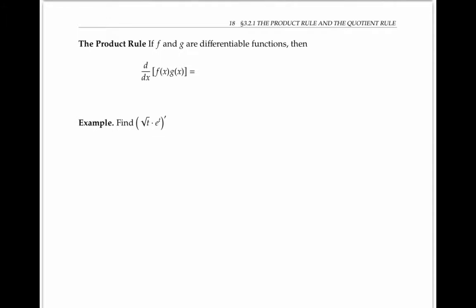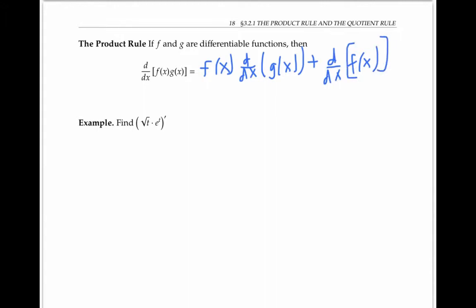The product rule says that if f and g are differentiable functions, then the derivative of the product f(x) times g(x) is equal to f(x) times the derivative of g(x), plus the derivative of f(x) times g(x). In other words, to take the derivative of a product, we take the first function times the derivative of the second, plus the derivative of the first times the second.